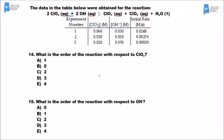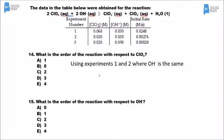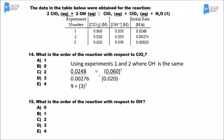For number 14, we're looking for a differential rate law: rate equals K times [ClO₂] to some exponent times [OH⁻] to some exponent. We pick experiments where OH⁻ is the same but ClO₂ changes — I'll use experiments 1 and 2. Comparing what happens to the rate versus the concentration of ClO₂, we get 9 equals 3 to some exponent, making the exponent 2. So with respect to ClO₂, this is second order.